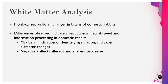When they did the white matter analysis, they found that while it was changed overall, there were not specific regions identified as changed, unlike the gray matter. Some of the differences indicate a reduction in neural speed and information processing in domestic animals. The indication was that there are density changes in the white matter, changes in the amount of myelination, and changes in axon diameter, which affects neuron speeds.